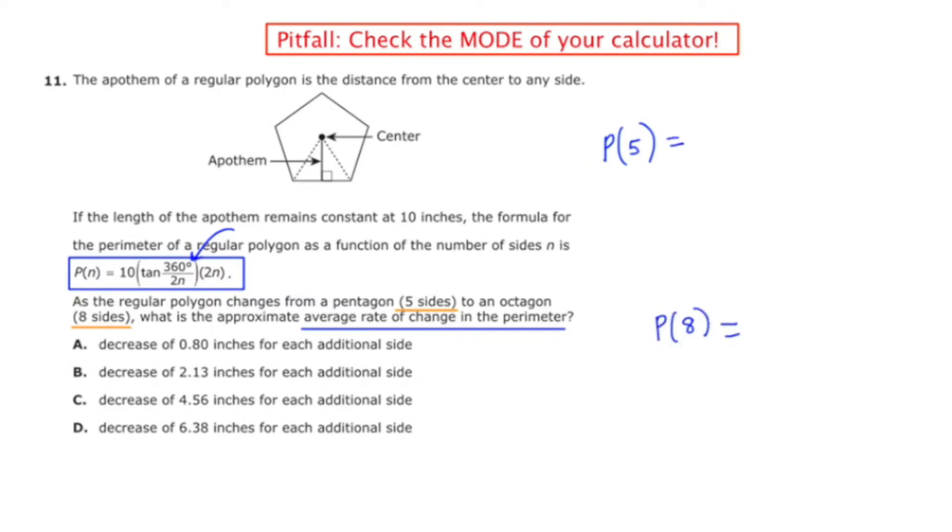And then once we're done with these two calculations, we're going to need to calculate the average rate of change in the perimeter by treating it like a slope question, and we'll get to that in the third stage.